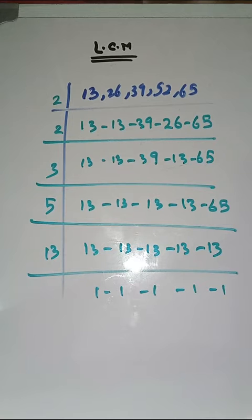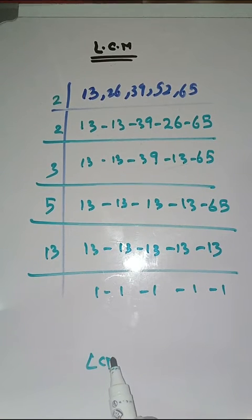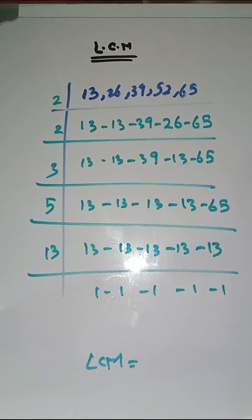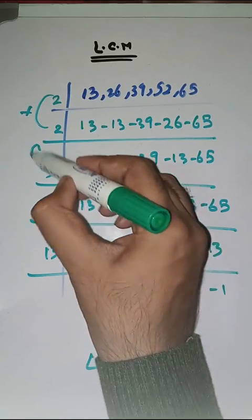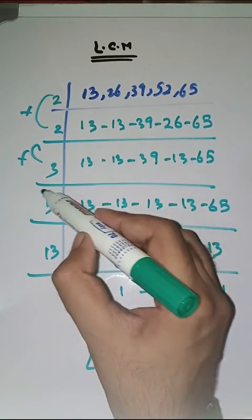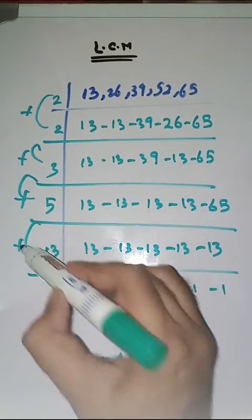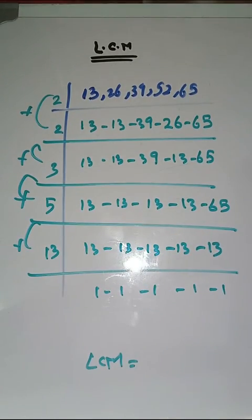13, 1s are 13. So LCM of 13, 26, 39, 52 and 65 is equal to product of prime factors which are 2 into 2 into 3 into 5 into 13, which is equal to 780.